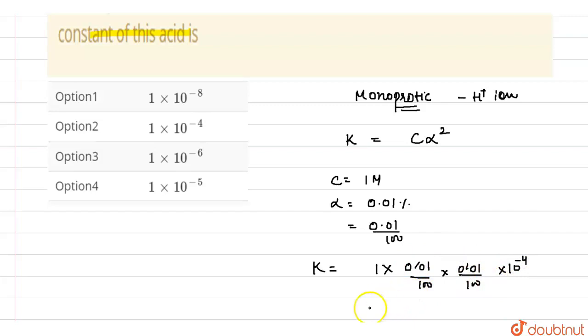And 10 raised to the power minus 4 and 10 raised to the power minus 4, total 10 raised to the power minus 8. Thus value of K comes out to be 1 into 10 raised to the power minus 8.